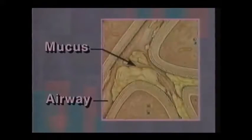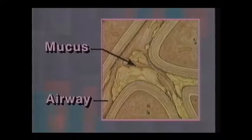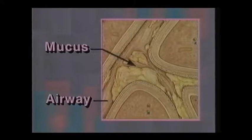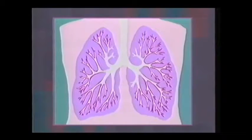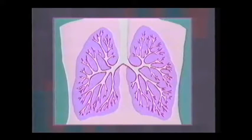Two: obstruction of the airways with mucus. This is most common in chronic bronchitis but may also be present in asthma and emphysema. Three: narrowing, inflammation, and spasm of the airways, which is characteristic of asthma.